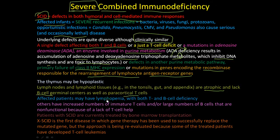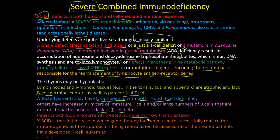Patients may have lymphopenia — few lymphocytes in the blood — and both T and B cell deficiencies. Some patients have increased immature T cells or large numbers of non-functional B cells due to lack of T cell help. Patients with SCID are currently treated with bone marrow transplant. X-linked SCID was the first disease in which gene therapy was used to successfully replace the mutated gene.